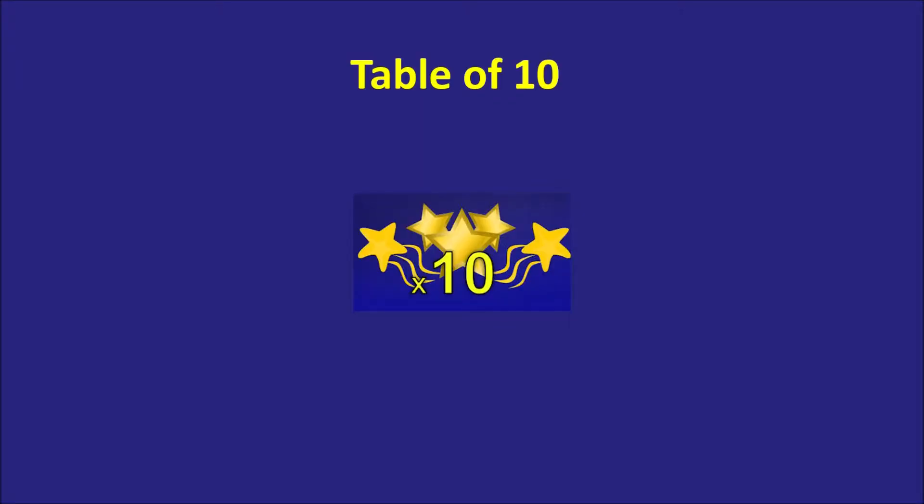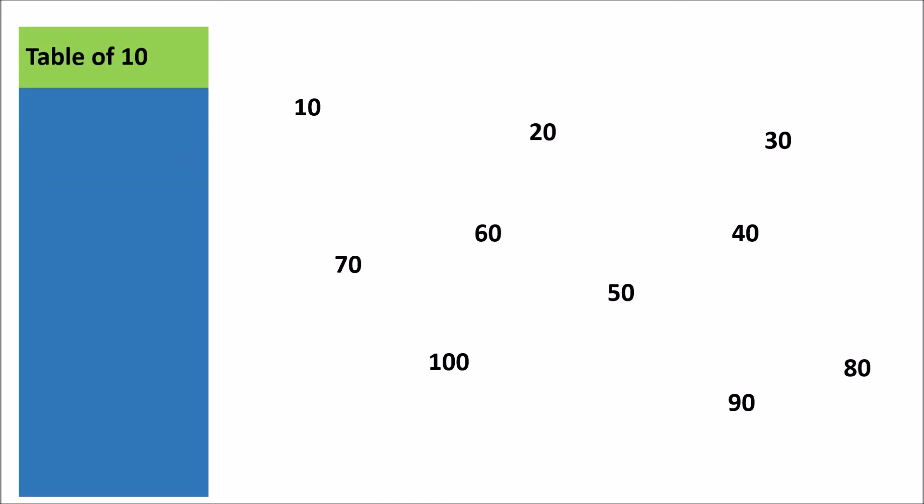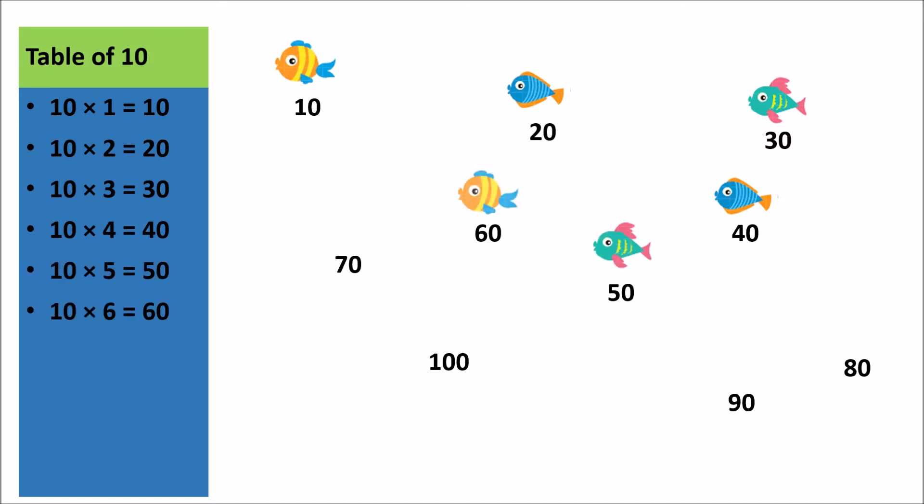Table of 10. This is the simplest. Here we go. 10 1s are 10, 10 2s are 20, 10 3s are 30, 10 4s are 40, 10 5s are 50, 10 6s are 60, 10 7s are 70, 10 8s are 80, 10 9s are 90, 10 10s are 100.